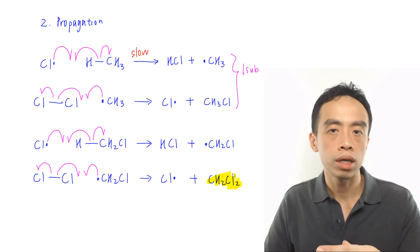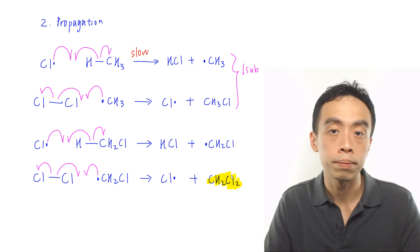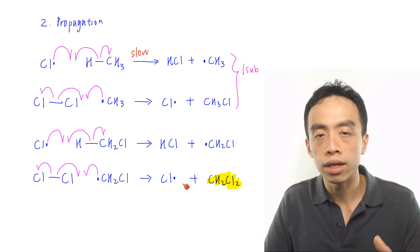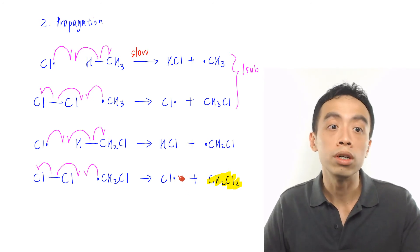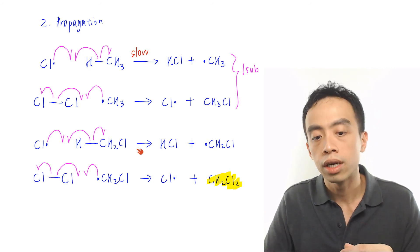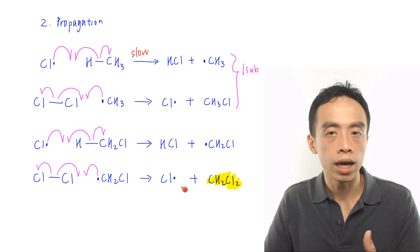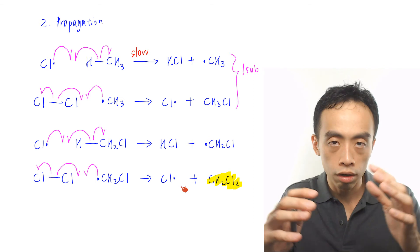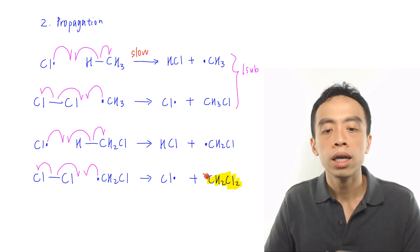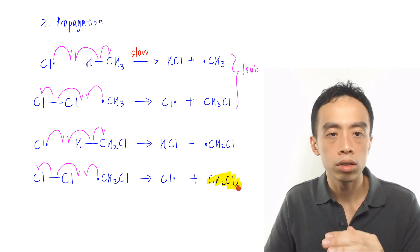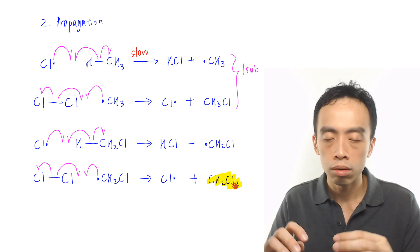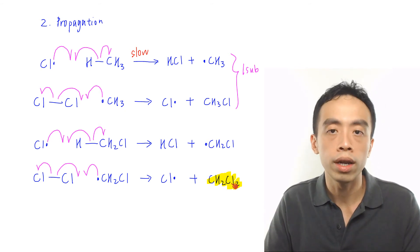Once we form the desired product, we can stop showing the propagation steps and move on to the termination step. But take note: this does not mean the reaction stops once CH2Cl2 is formed. Free radical substitution is a random process, so this Cl radical can continue to react with alkane, giving a third or fourth substitution with many different products. However, we are not interested in showing them because the question asks for the di-substituted product. We draw the minimum number of steps to reach the outcome we want, and then we show the termination step.